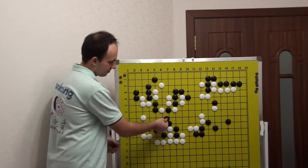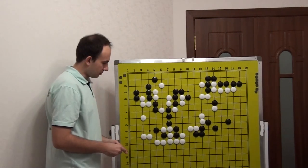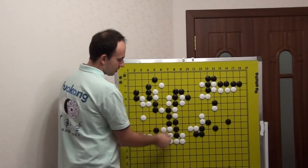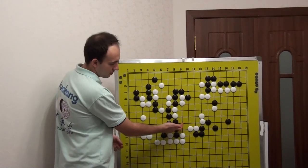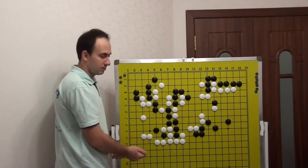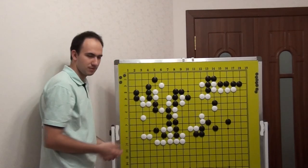From this side, Black will just connect. White plays here and Black can connect. White cannot even play here because of that, White needs to connect and Black kills again.